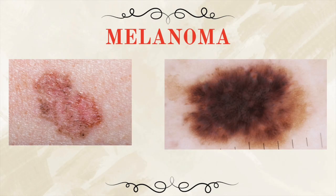Melanoma can be very deceptive because sometimes it starts as a mole that's been there for years, for decades even, and then it starts to grow or change. Other times, it shows up as a brand-new lesion — dark, irregular, or even pink and flesh-colored, making it harder to notice.